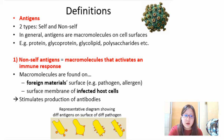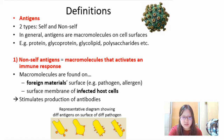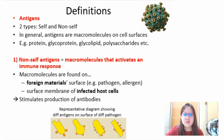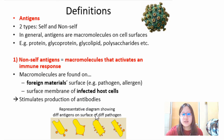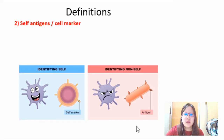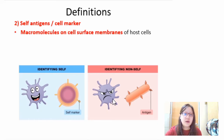Activating an immune response means stimulating the production of antibodies, which help defend your body. Importantly, different pathogens have different antigens — some have one type per pathogen, some have multiple types. When your cells recognize non-self antigens, they can identify which pathogen is present and what antigens are expressed on its surface.